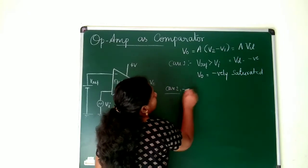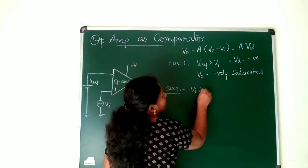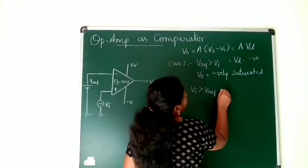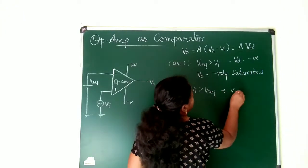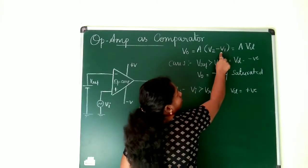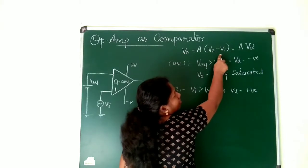Case 2 says that when VI is greater than V reference. So what happens? You know that VD will become a positive value. Because V2 is greater minus smaller value means it is a positive value.